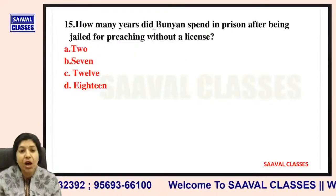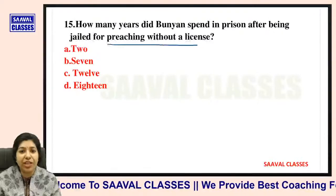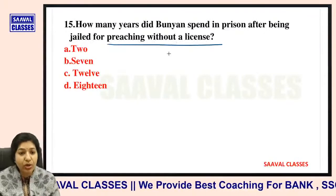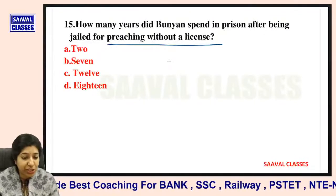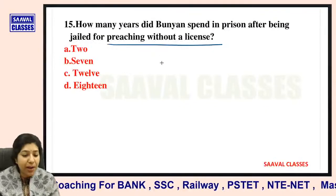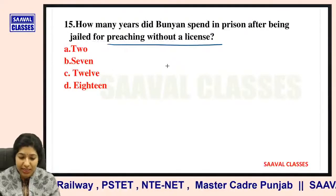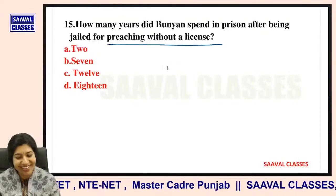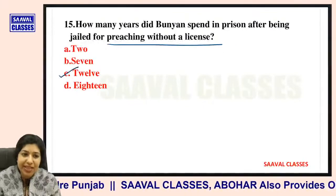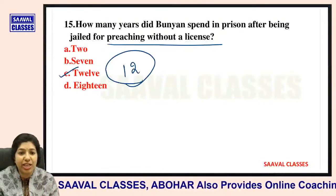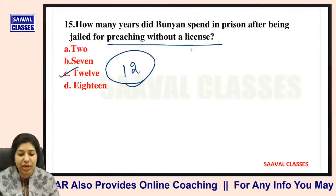Question number fifteen: How many years did Bunyan spend in prison after being jailed for preaching without a license? 2, 7, 12, or 18 years? Bunyan ko kitne saal jail mein kaatne padhe the is ilzam ki wajah se ki wo logo ko preach kar rahe the lekin unke paas preacher ka license nahi tha. He spent 12 years in jail.